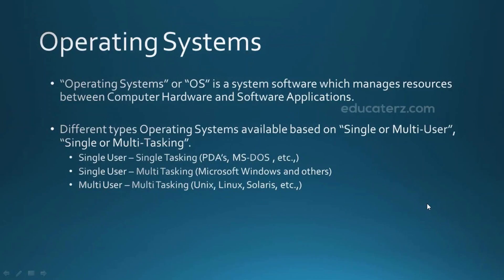In a single-user system, only one person can log in to the system at any particular interval of time. For example, if you are working on a Windows system like Windows XP or Windows 7 and your friend wants to log in to that system, you need to log out and give the system to the other person. It allows only one person to work on the system at any particular time.